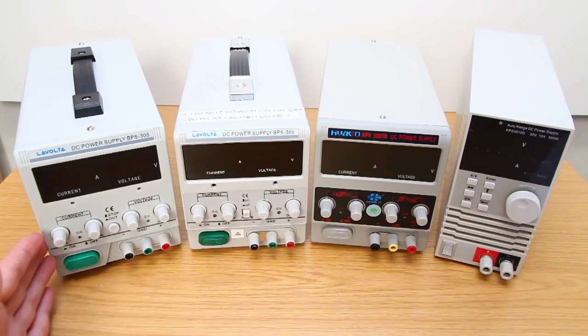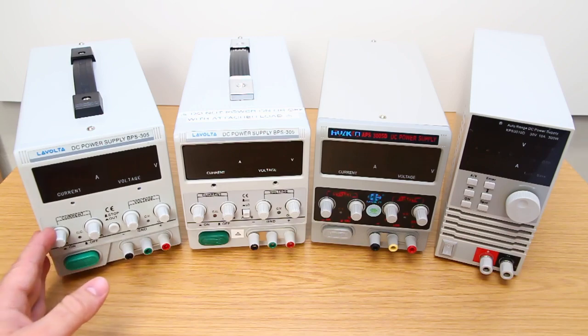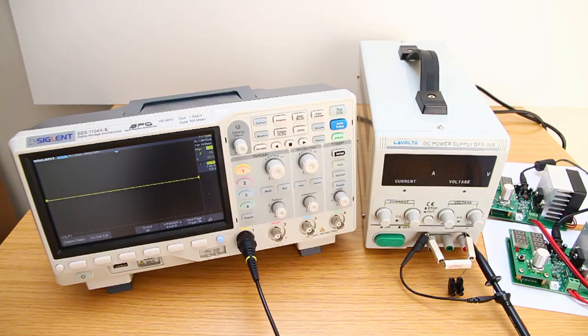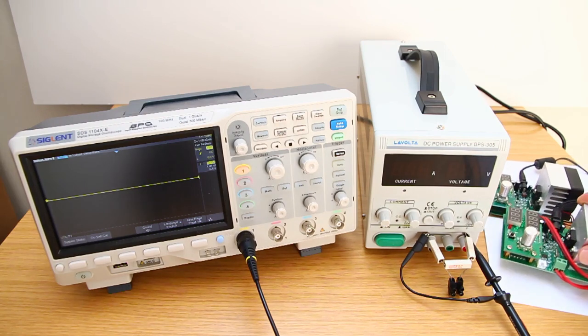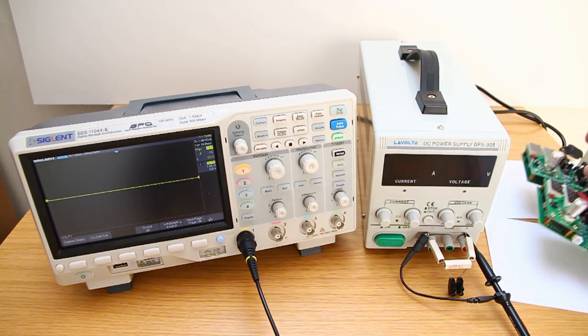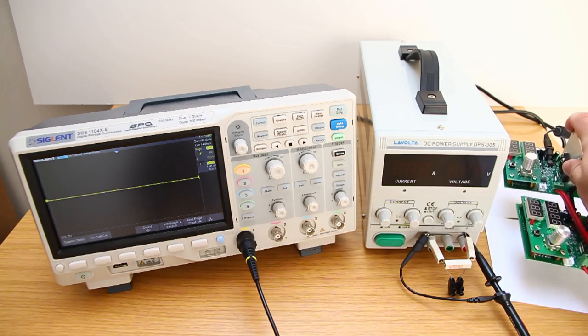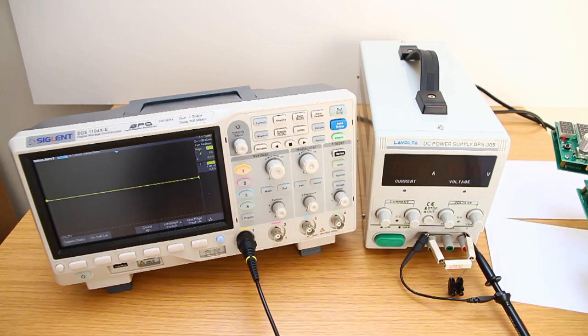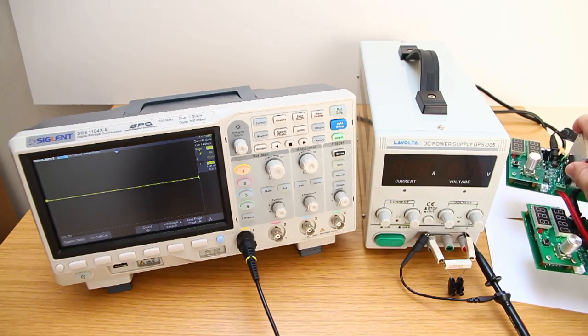Since I'm going to change my setup for this test, I have to remeasure the ripple of this LaVolta BPS 305 Mark II again. First, a few details about my setup. I'm not gonna use these electronic loads because their regulation might produce noise and we would see that in the measurement, so that wouldn't be fair.